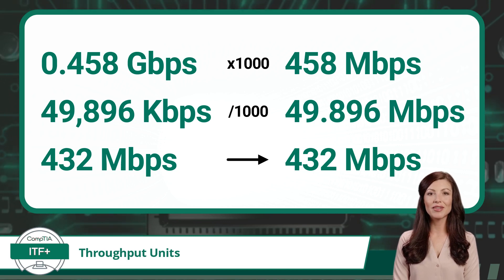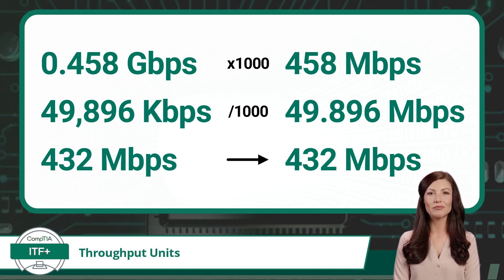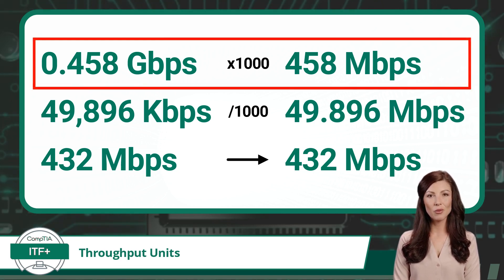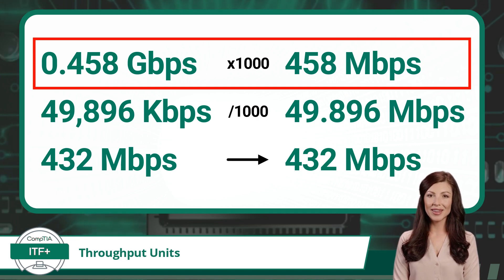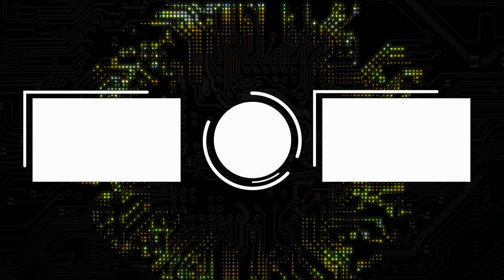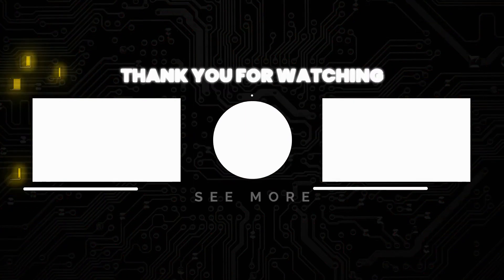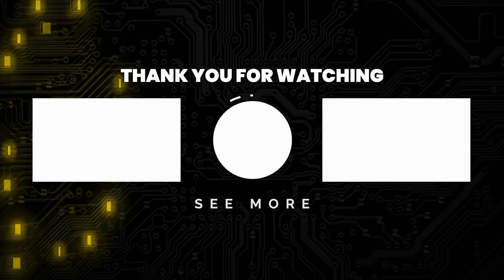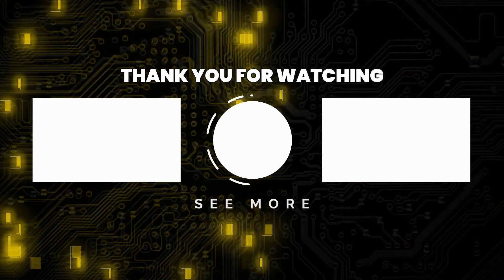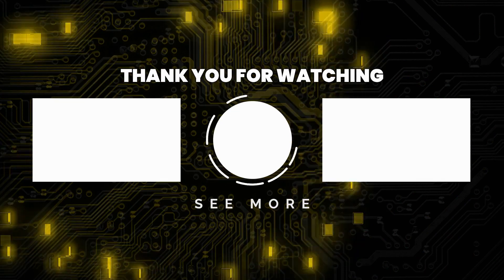Comparing these values is now much easier as they have all been converted to the same throughput unit. Taking a quick look at our original values, we can now see that 0.458 gigabits per second is the fastest of the three. Thank you for watching — subscribe for more great content.